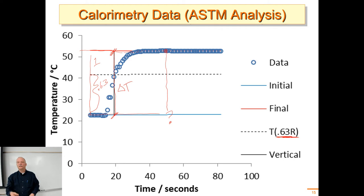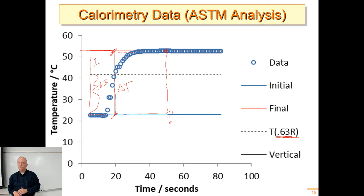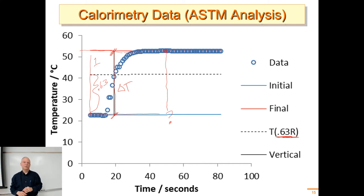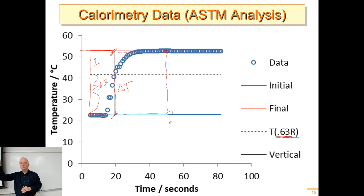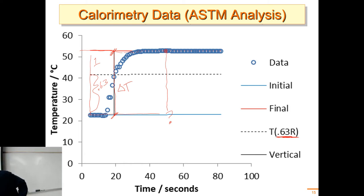We need an operational definition that tells us how to collect delta T so that it's unambiguous — so different analysts using the same procedure get the same answer. You'll get more practice with this when you analyze data in Excel. I've made a workbook that does these extrapolated lines and gives you the delta T — you paste in your data, look at my formulas, and it does the analysis for you.